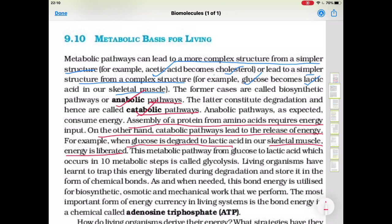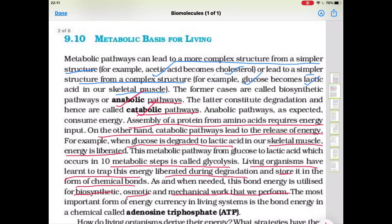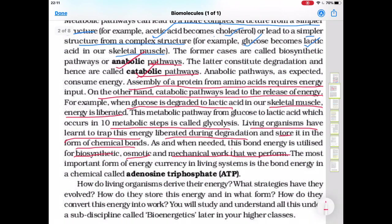The metabolic pathway from glucose to lactic acid, which occurs in 10 metabolic steps, is called glycolysis. Living organisms have learned to trap this energy liberated during degradation and store it in the form of chemical bonds — specifically as ATP molecules. When needed, this bond energy is utilized for biosynthetic, osmotic and mechanical work. The most important form of energy currency in living systems is the bond energy in ATP, that is adenosine triphosphate.